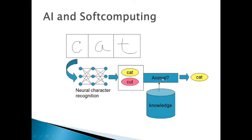The system identifies whether something is an animal by using its knowledge base. Based on the knowledge acquired, it matches that a cat is a kind of animal, and then it can find that a particular word is 'cat'. This is about the working of soft computing to solve any problem which it faces.